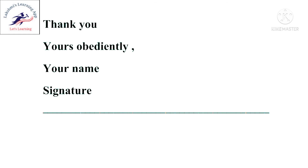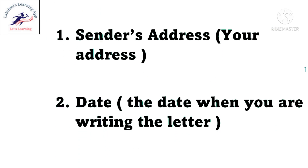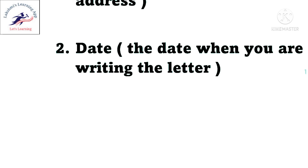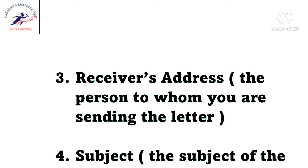I think it's clear to you. Once again, let's look at the format of the letter. First, you want to write the sender's address — that means your address. Second, you want to write the date — the date when you are writing the letter. Third is the receiver's address — the address of the person to whom you are sending the letter.